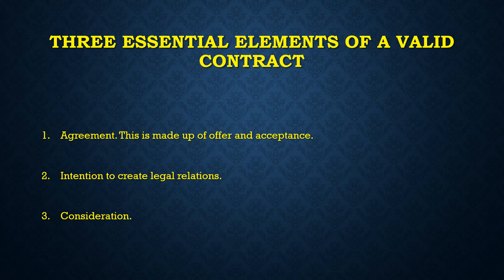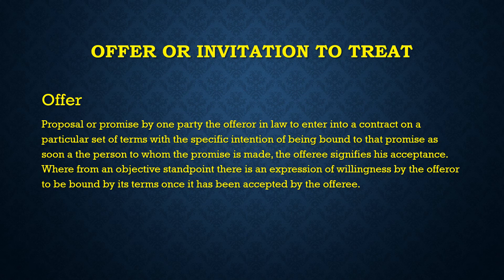We need to know what is an offer and be able to distinguish an offer from other forms of communication. A crucial distinction to be made is between offer and invitation to treat, because in order to have an agreement we must have an offer that can be accepted and not just an invitation to treat. An offer could be defined as a proposal or a promise by one party — the offeror — to enter into a contract on a particular set of terms, with the specific intention of being bound to that promise as soon as the person to whom the promise is made, the offeree, signifies his acceptance, where from an objective standpoint there is an expression of willingness by the offeror to be bound by its terms once accepted.